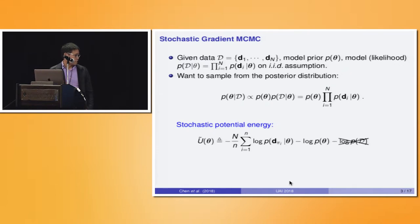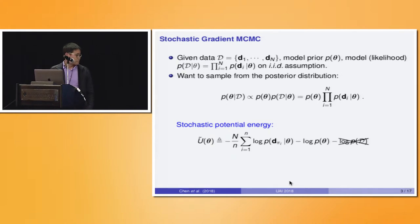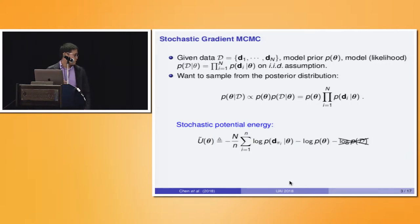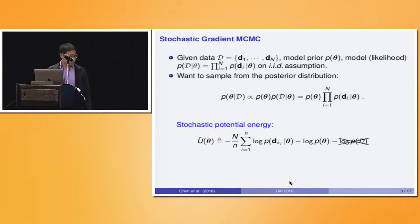The task in Bayesian sampling is to compute the posterior distribution P(theta|D), which is proportional to the prior times the likelihood, and can be decomposed as a product of N+1 terms. SGMCMC is a scalable Bayesian sampling method that utilizes the stochastic gradient of the log posterior. We define a term called Stochastic Potential Energy, computed using a mini-batch of size n, which is essentially the negative log posterior plus a constant.